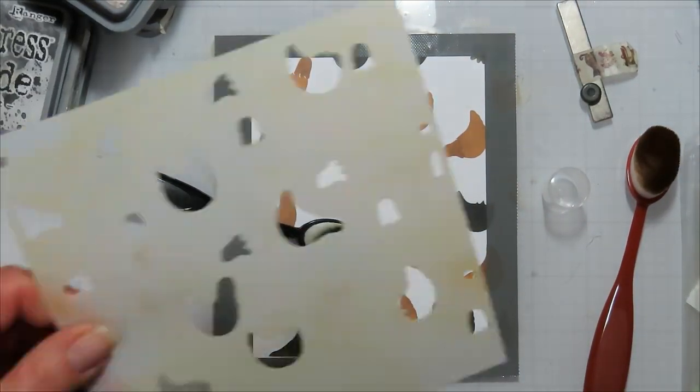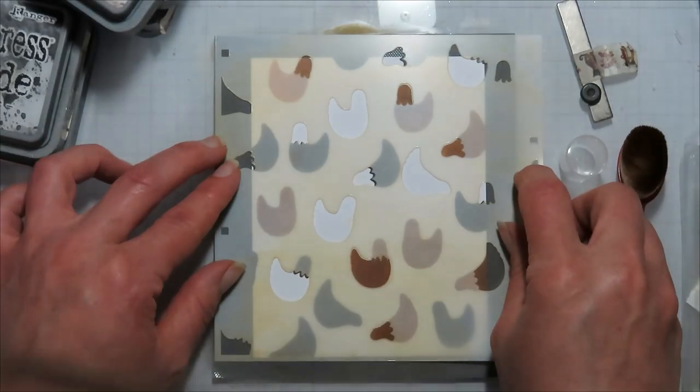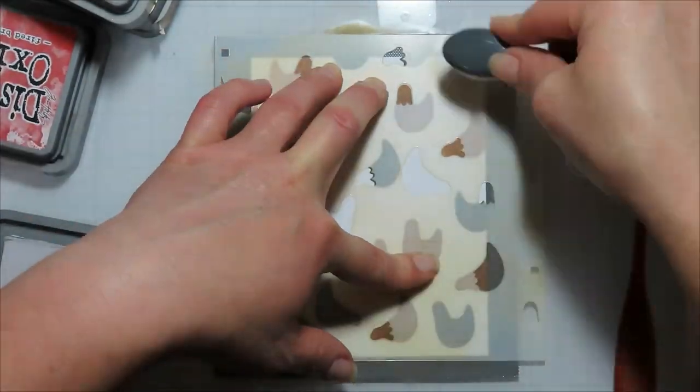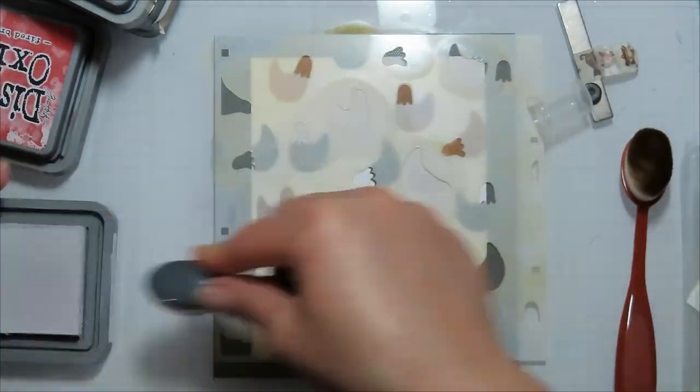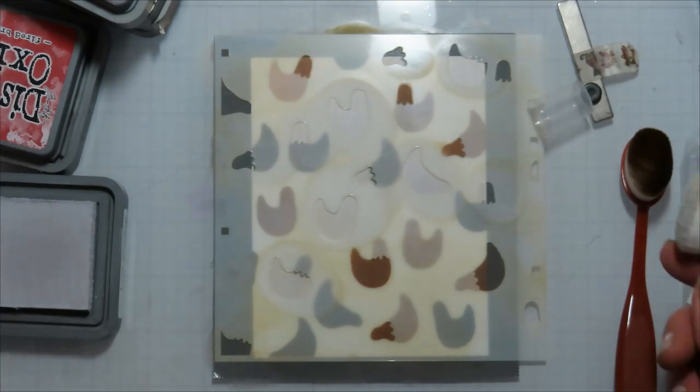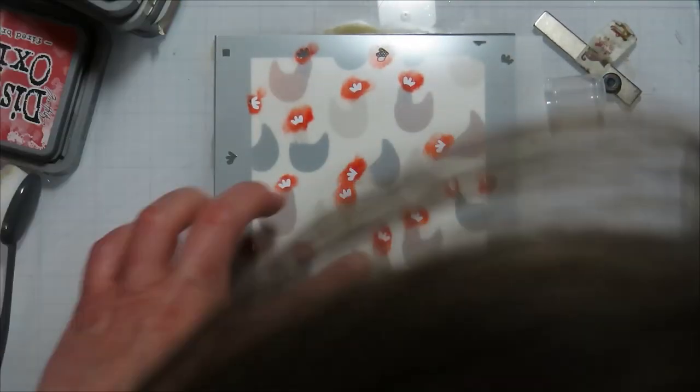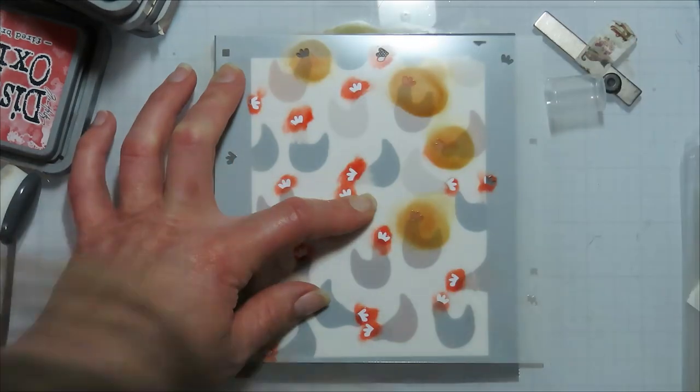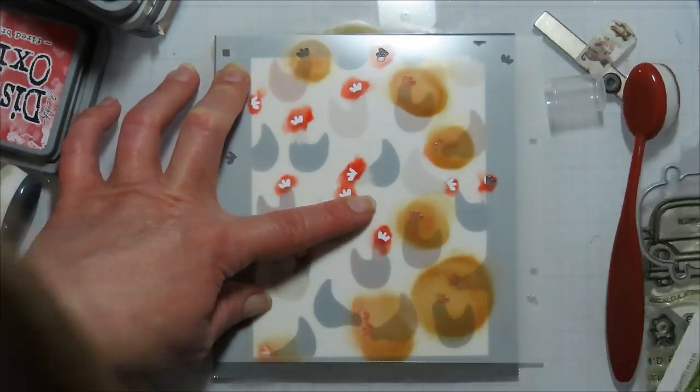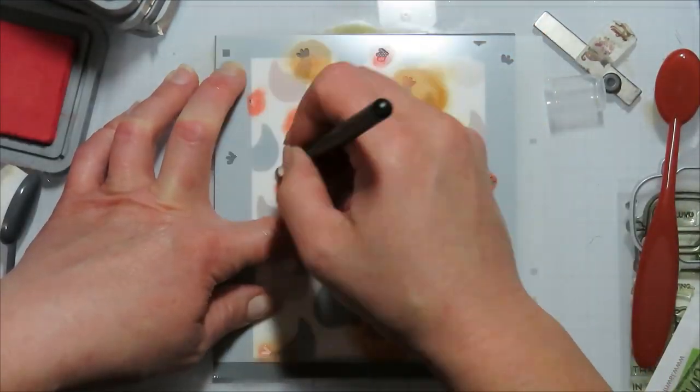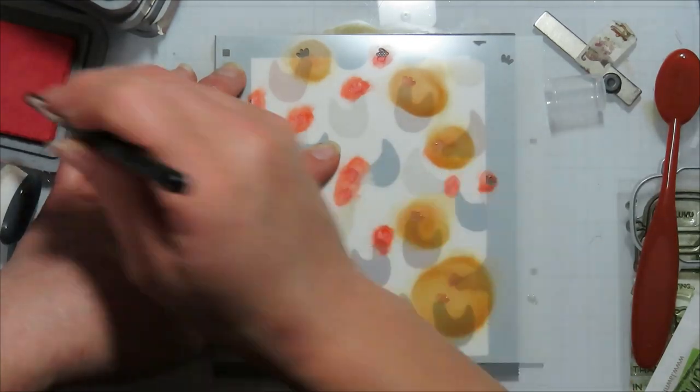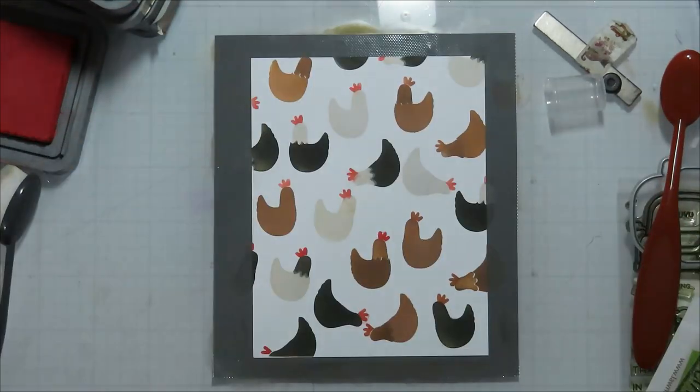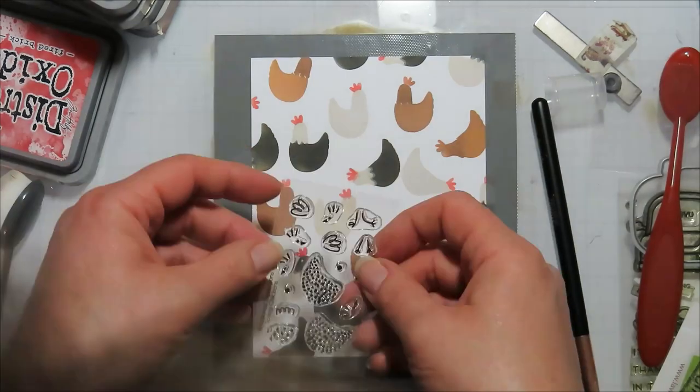But before I can come in with that lost shadow, I do need to clean my stencil. So I just used some rubbing alcohol in a little spray bottle. I sprayed it and buffed it off a little bit. I just needed it to be clean enough that it wasn't going to mix with my lost shadow. And that way I can use the stencil right away without waiting for it to dry.